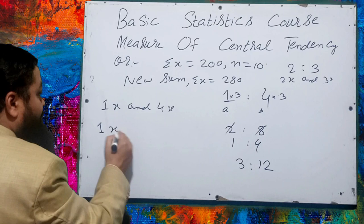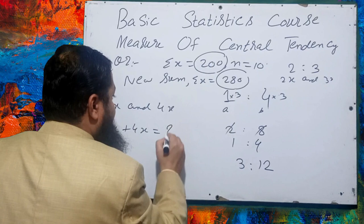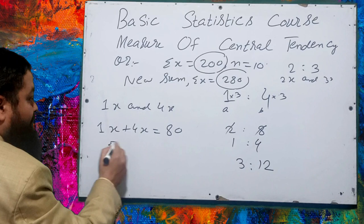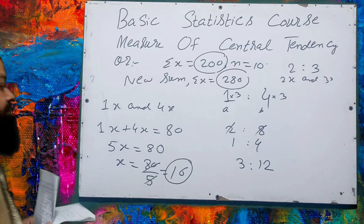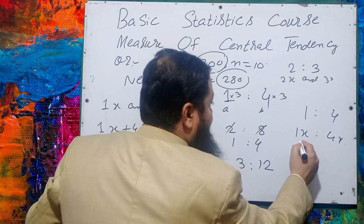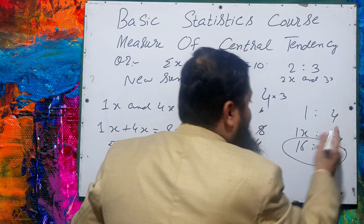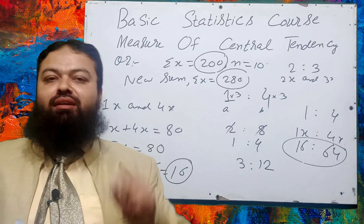In this question, ratio is 1:4, so suppose the two numbers are 1x and 4x. The previous sum was 200 and the new sum is 280, so the sum of the two new numbers is 280 minus 200 = 80. Therefore 1x + 4x = 5x = 80, so x = 16. The first number is 16 and the second number is 4 × 16 = 64. Verify: 64 + 16 = 80. That is the correct option in the exam.